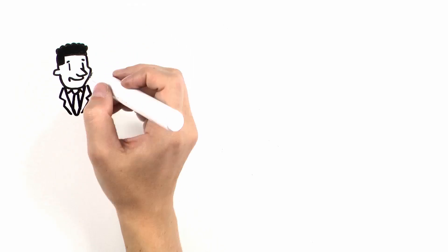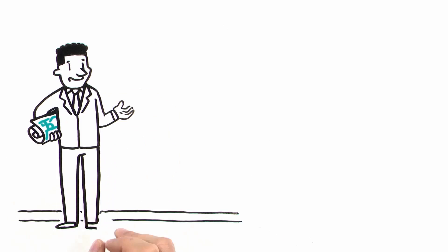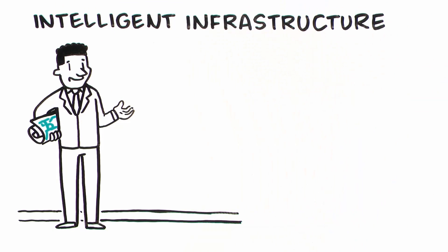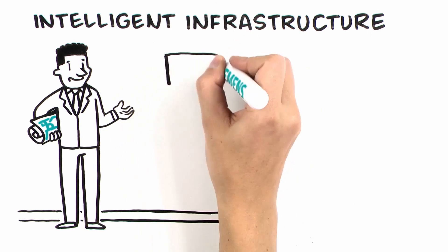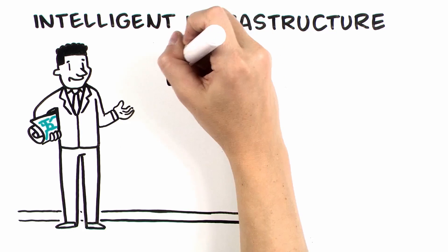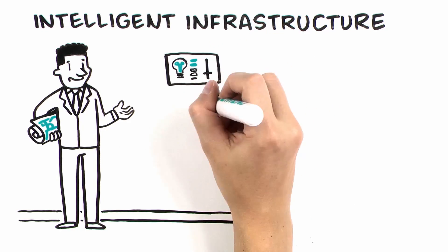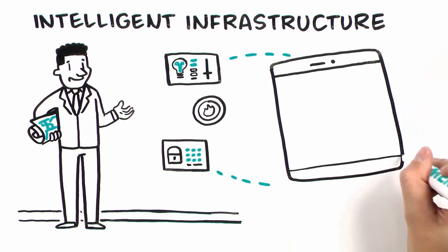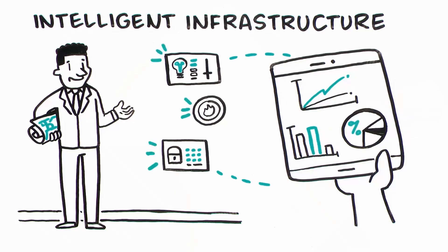The foundation of Siemens' smart building solution is an intelligent infrastructure with IoT devices that capture data and a powerful integration platform that connects all your building systems, such as automation, lighting, security, and fire, as well as business systems such as asset management.